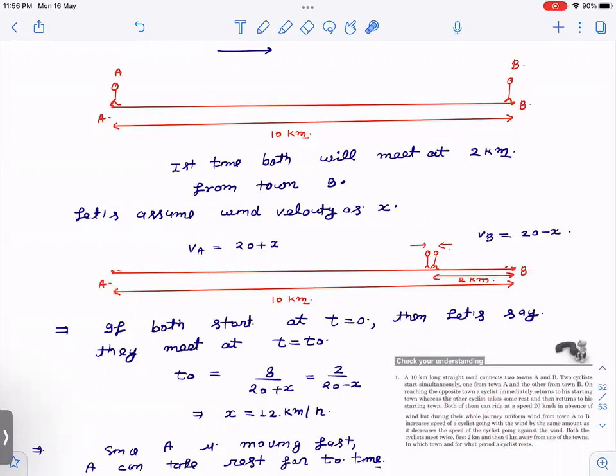So what I have written here, first time both will meet at two kilometers from town B because the speed of A is more. Let us assume the wind velocity is X. Velocity of A will become 20 plus X because it is moving in the direction of wind. B will become 20 minus X because B is moving opposite to the direction of wind. And let us say T equal to T₀, they meet. So T equal to T₀ will be 8 divided by 20 plus X, which equals 2 by 20 minus X. If you solve, you get X equals 12 kilometers per hour. So the wind velocity we have got.